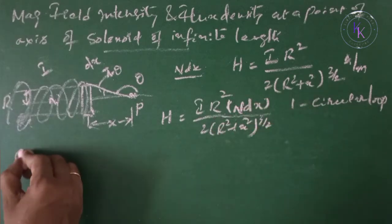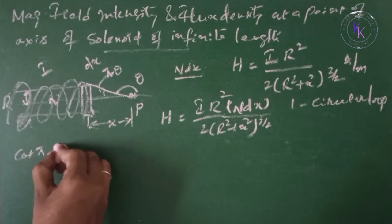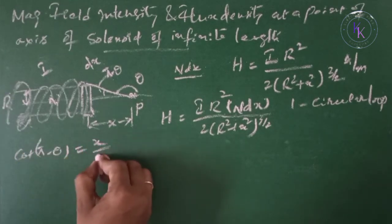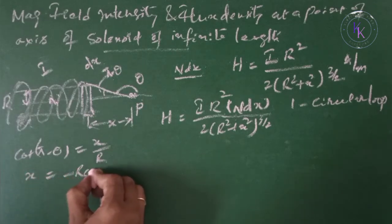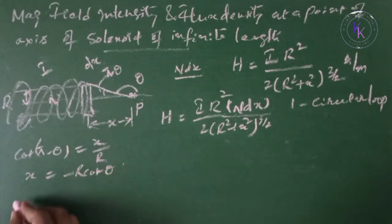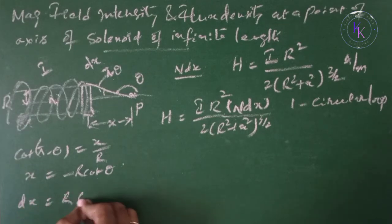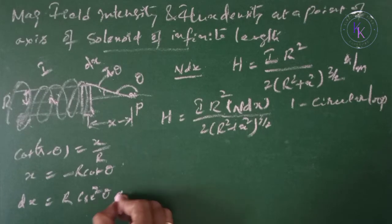Now from the figure, cot(π - θ) equals to x by R. Then x equals to minus R cot θ. Differentiating on both sides we get dx equals to R cosecant squared theta d theta.